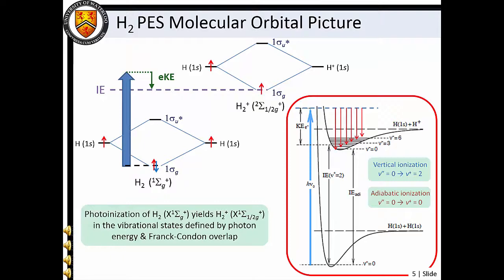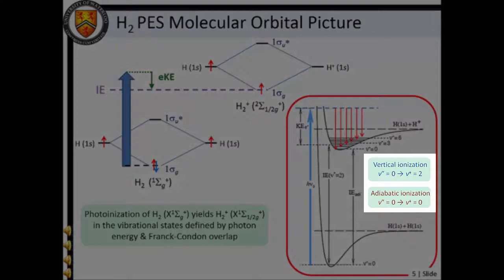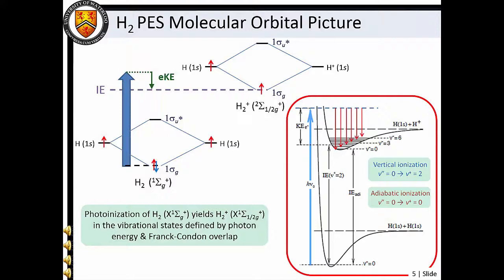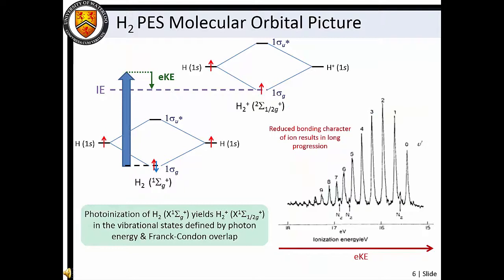Now we will define two different ionization energies: the adiabatic ionization energy and the vertical ionization energy. The adiabatic ionization energy is defined as the energy difference between the V equals zero levels of the neutral molecule and the ion. The vertical ionization energy is the most probable ionization threshold accessed from the ground vibronic state, as defined by Frank-Condon overlap. In the case of molecular hydrogen, we find that vertical ionization occurs to the V equals two level of the molecular ion. We also see that a long progression of peaks is observed in the photoelectron spectrum owing to the relative offset of the H2 plus potential energy curve compared with that of the neutral molecule. We can conclude that a long vibrational progression in the photoelectron spectrum is indicative of a significant change in bonding character upon photoionization.